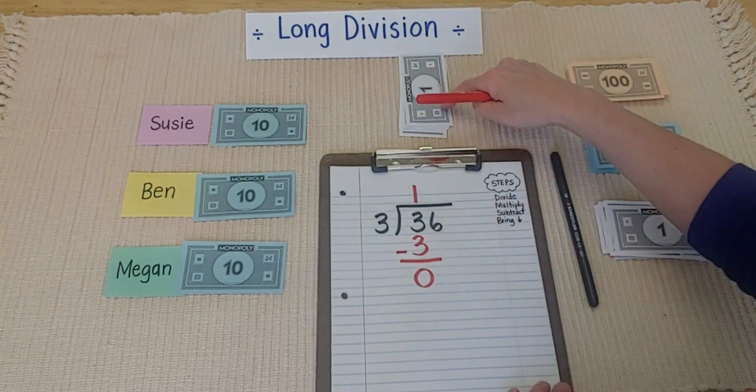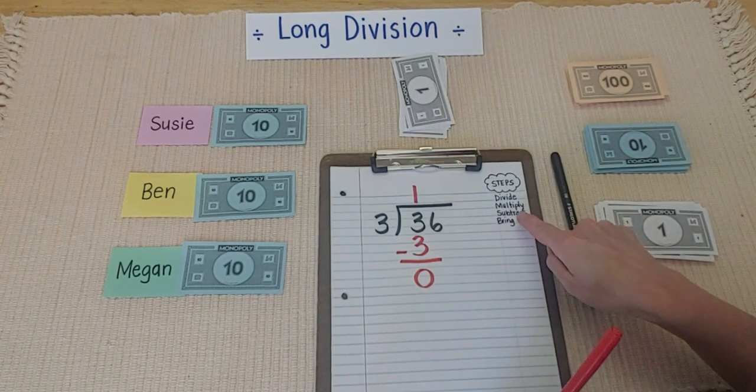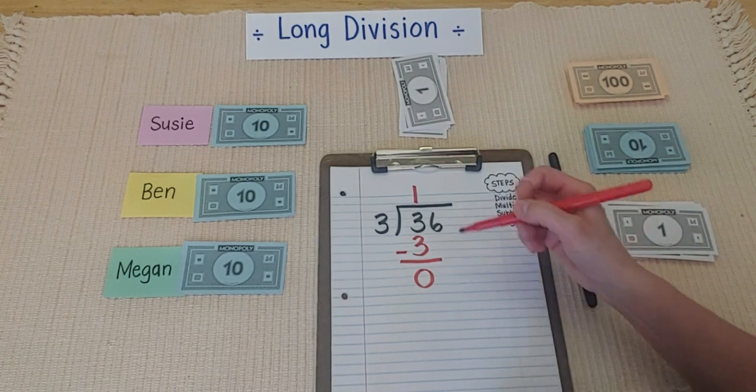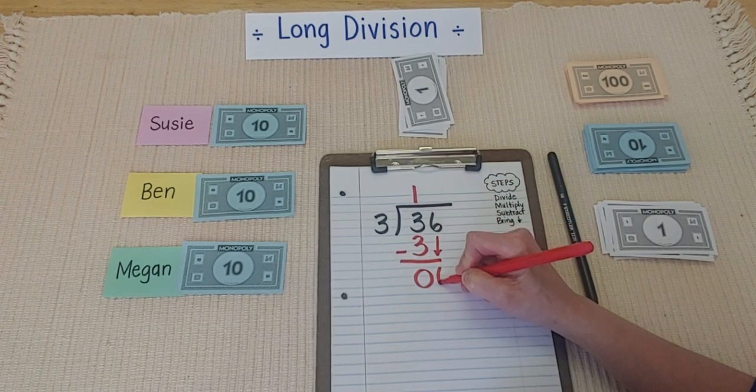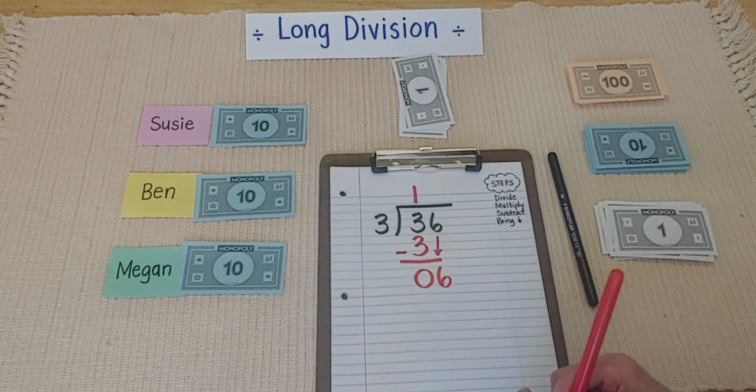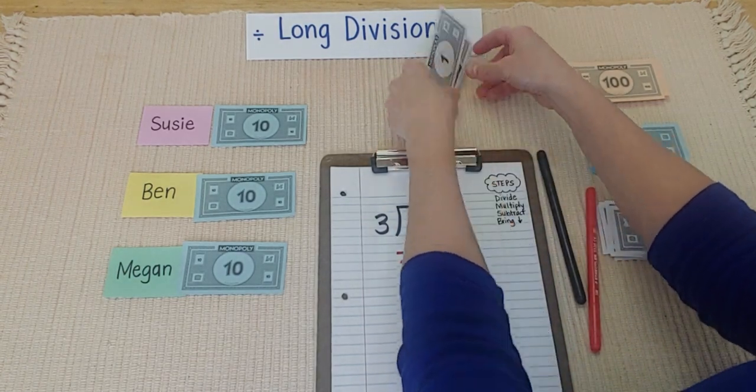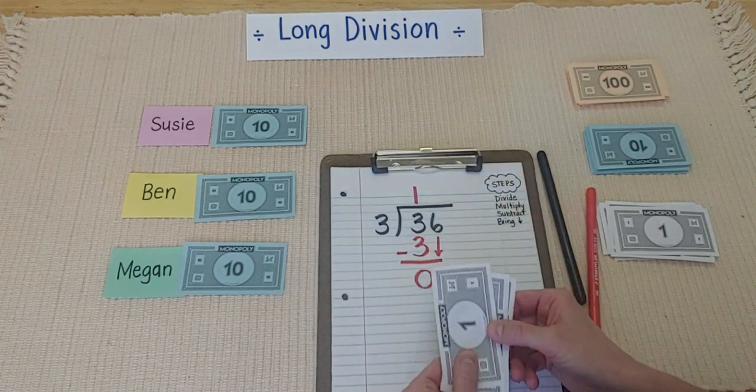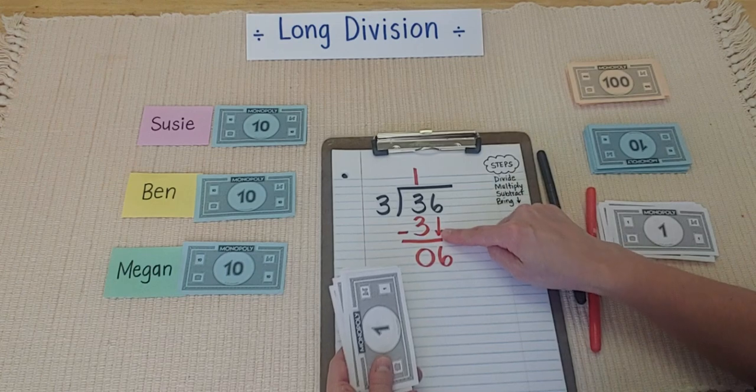So, now I need to start sharing my ones. And that, my friends, is where the bring down step comes from. I need to bring down my six ones. Because I didn't use them yet. So, I'm going to bring down. I'm going to take my ones like this. And bring them down to start sharing. And that's where that comes from. The bringing down part.